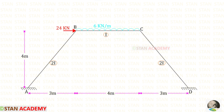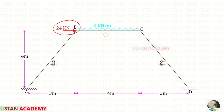In AB and CD there is no load. In BC we have a uniformly distributed load of 6 kilo-Newton per meter, acting for the full span. At joint B there is a nodal point load of 24 kilo-Newton, acting towards the right side.